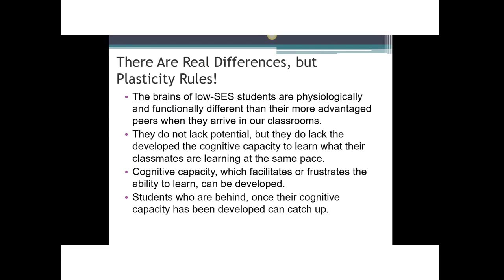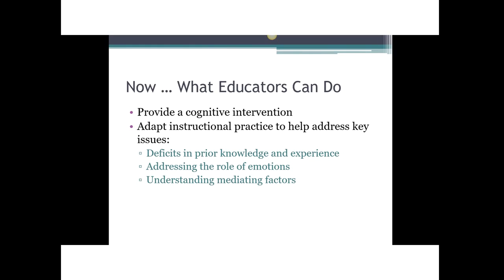Putting this all together, what we know is that the brains of our low SES students are functionally and physiologically different. Even when they have good teaching, good curriculum, and a safe environment, it will still take them longer to learn what they must to thrive academically. But — and this is the important punchline — the very plasticity that developed their brains that way can be harnessed to overcome those initial deficits. Students with less cognitive ability can still develop it. Now we tackle the second part of the webinar: what educators can do — first, providing a cognitive intervention, and second, adapting instructional practice.